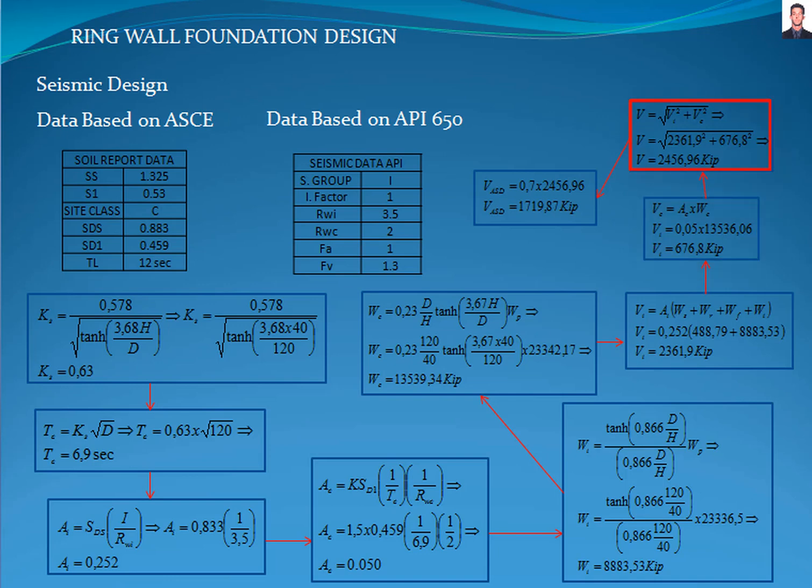Finally, we calculate the seismic pressure defined as the square root of the sum of the squares with the equation E6.1-1 resulting in 2,456.96 kilopounds.